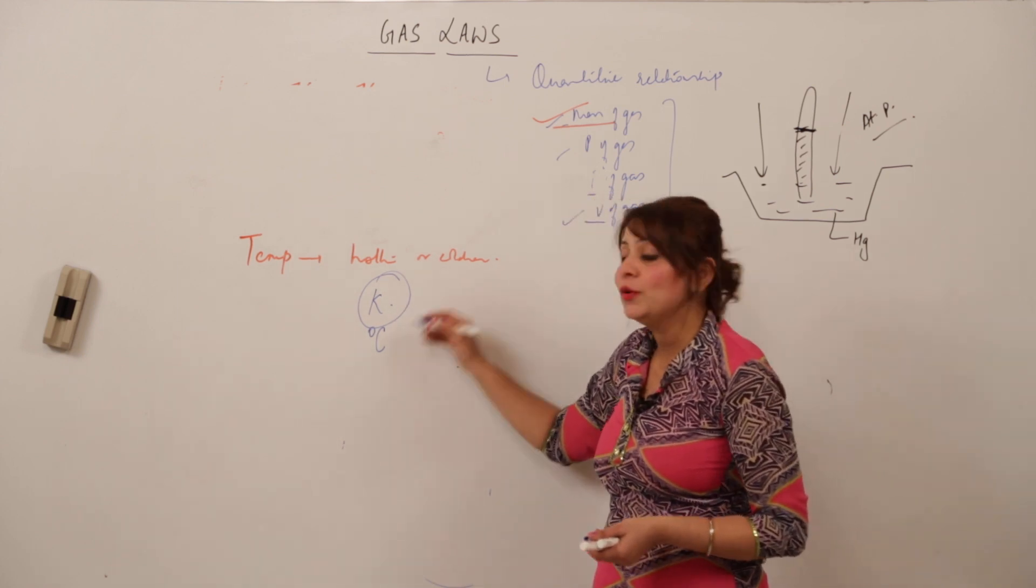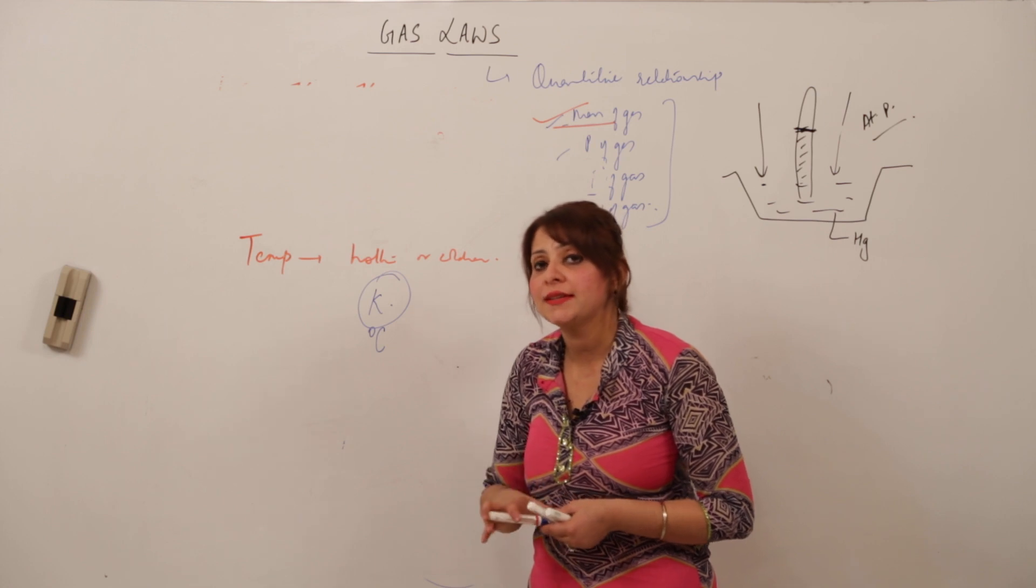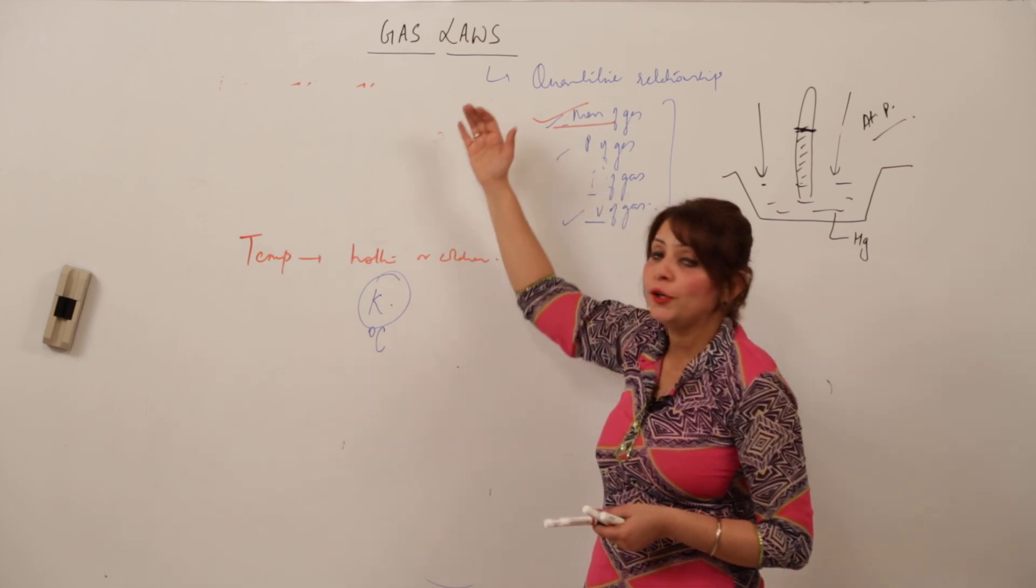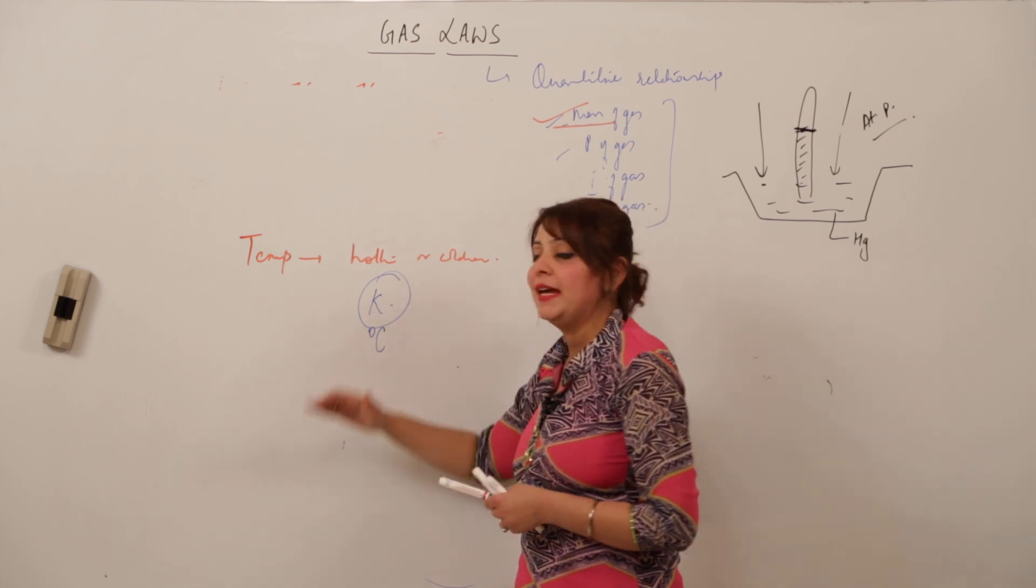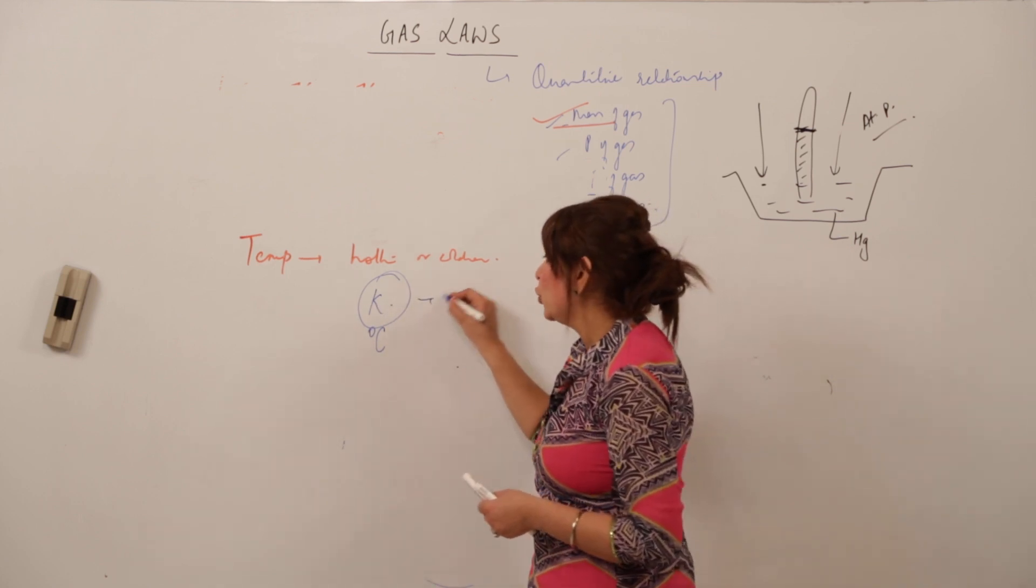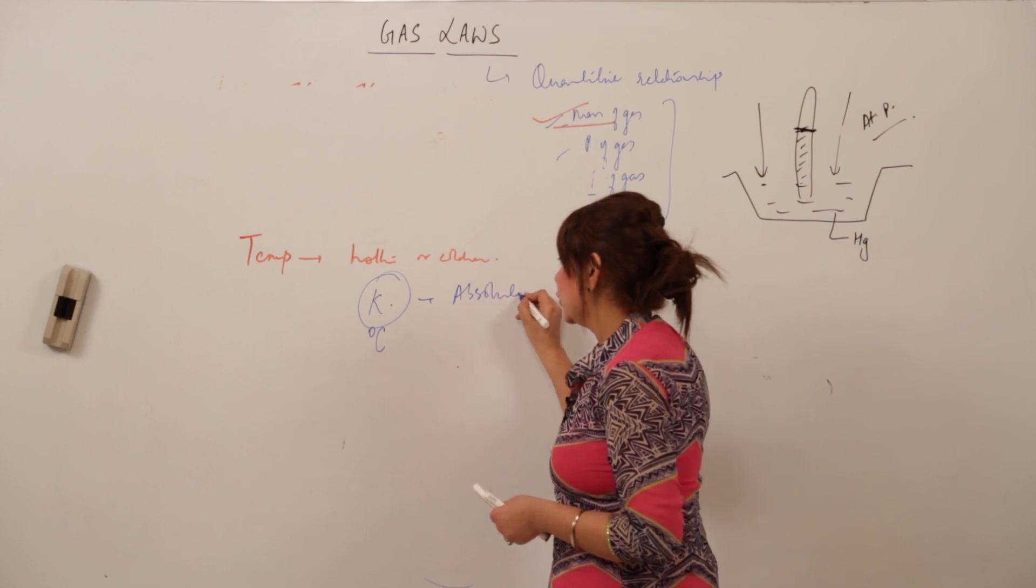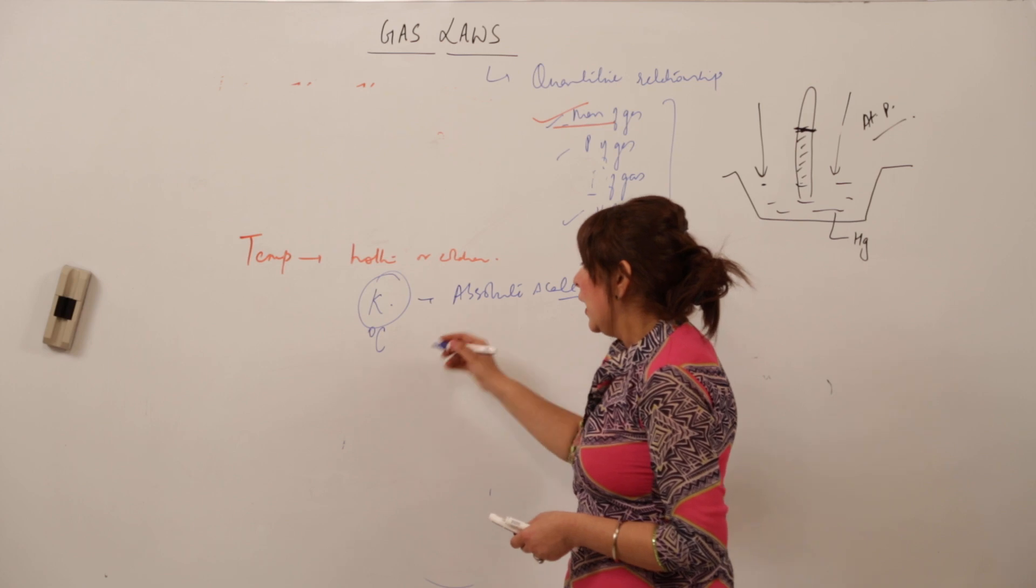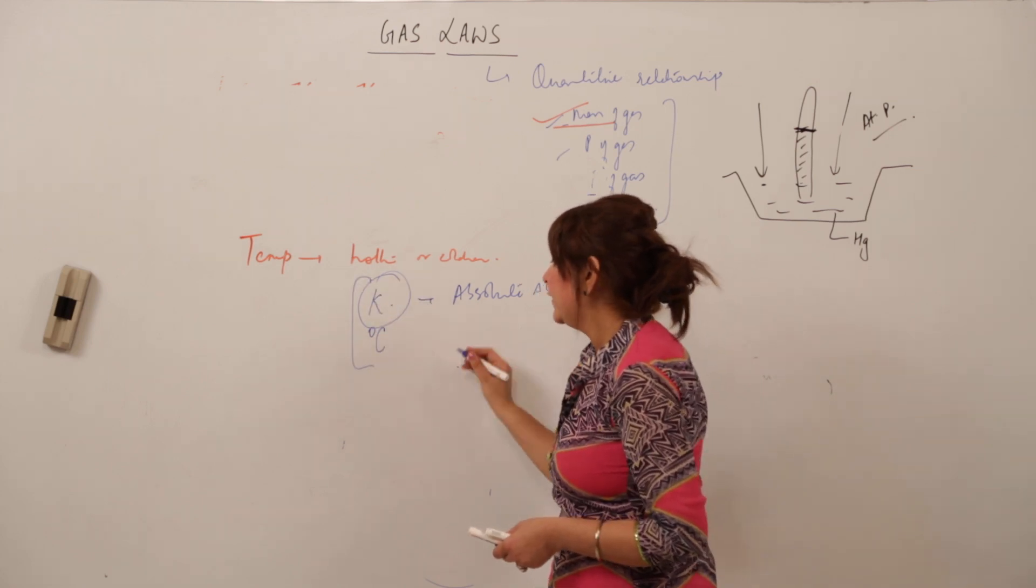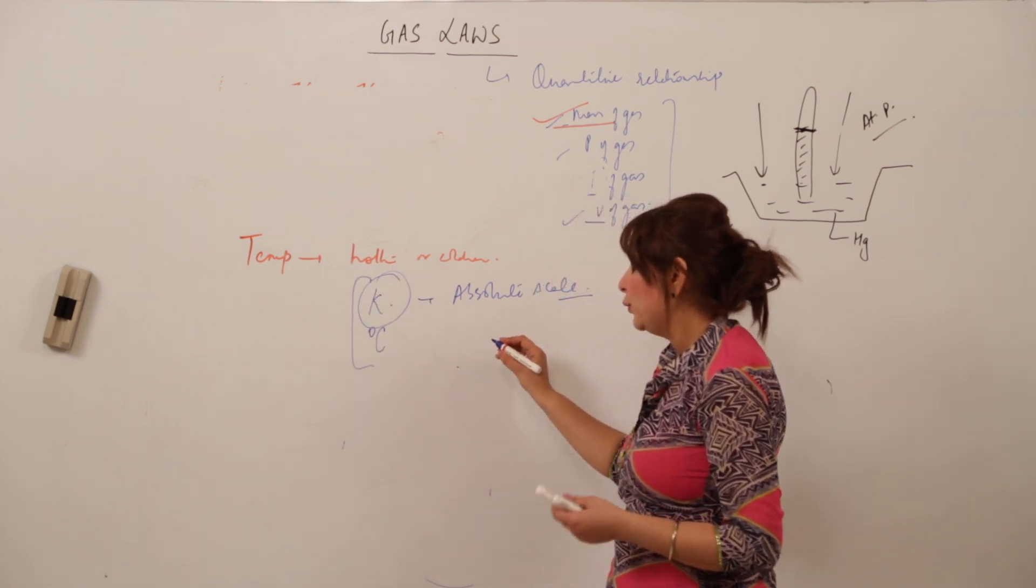We'll be taking into consideration the scale, how the scale was invented and what actually the scale is when we'll be talking of the second law, that is Charles law. So for this moment you should know that there is a scale called the Kelvin scale which is called the absolute scale of temperature, and what is the reason behind we'll be taking up in Charles law and how these scales are inter-converted.